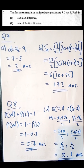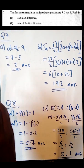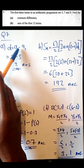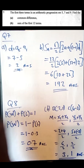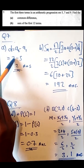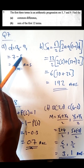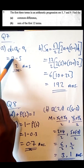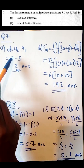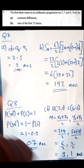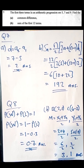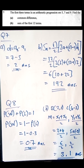How do you find the common difference? The common difference is found by the second number minus the first number. In this case, seven minus five gives you two as your final answer. So two is the common difference.